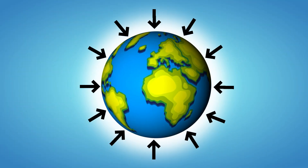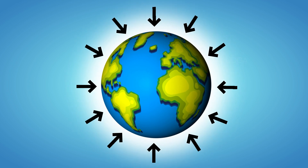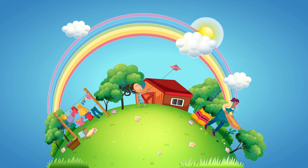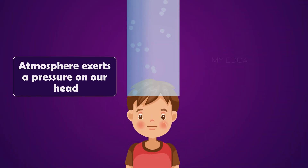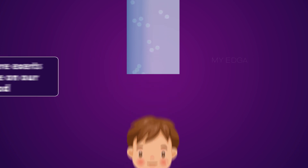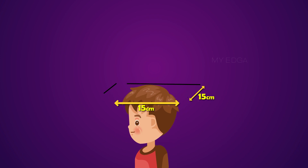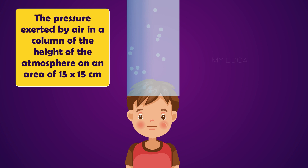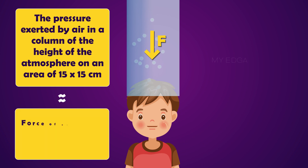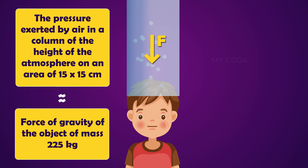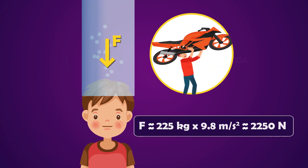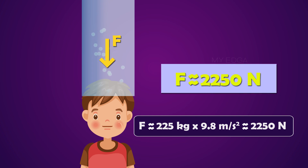We have already learned that the atmosphere exerts pressure on the surface of the Earth as well as on the objects present on its surface. Similarly, the atmosphere exerts a force on our heads also. Imagine that the area of your head is 15 by 15 centimeters. Then the pressure exerted by air in a column of the height of the atmosphere on an area of 15 by 15 centimeters will be nearly equal to the force of gravity on an object of mass 225 kg — that is, 2250 Newtons.